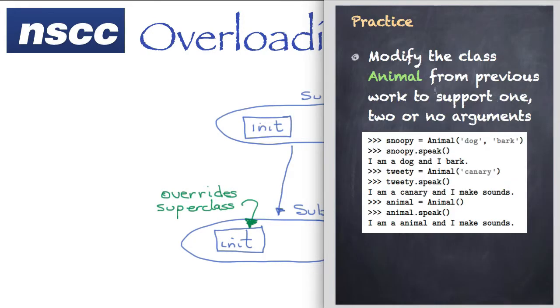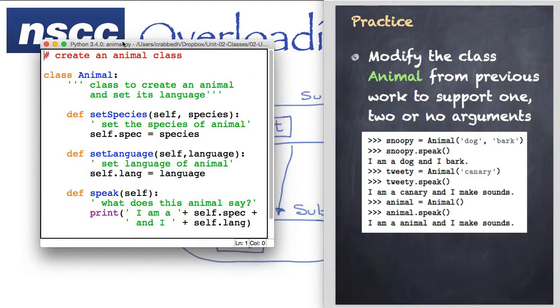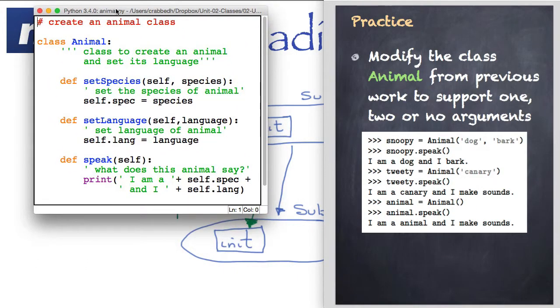As our final example, we're going to look at modifying the animal class to take 0, 1 or 2 arguments and exhibit this type of behavior. Let's bring up our animal class here and modify it to do this. Your exercise is to pause the video, see if you can modify it and get the behavior you see here.